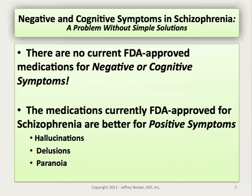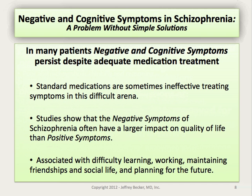Unfortunately, the negative and cognitive symptoms of schizophrenia are a problem without simple solutions. There are currently no FDA-approved medications for the negative or cognitive symptoms, despite the fact that these symptoms can be extremely debilitating and can impact recovery significantly. The medications that are FDA-approved for schizophrenia in general do help, but they are generally better at treating the positive symptoms — the hallucinations, voices, illusions, and paranoid thinking — and are not nearly as good at treating the negative and cognitive symptoms. Negative and cognitive symptoms persist often despite adequate medication treatment, even with high doses and multiple medications.